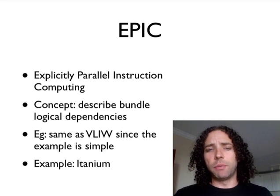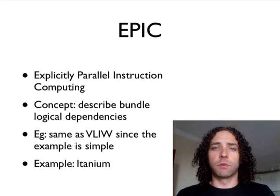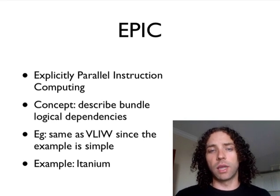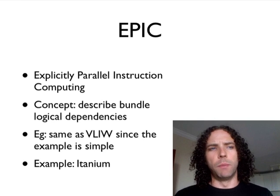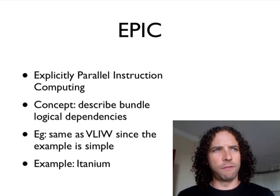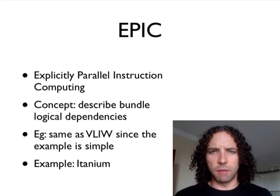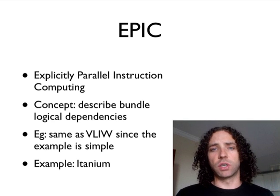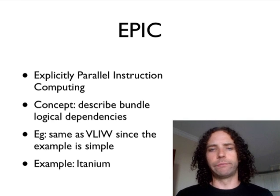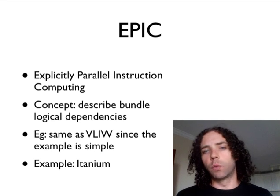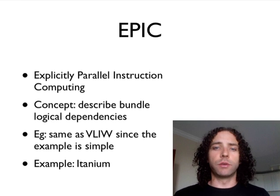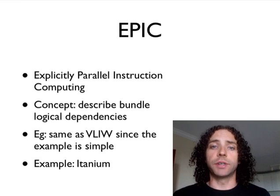The example of EPIC in the market is Intel's Itanium processor. As I understand it, all implementations execute six instructions at a time, with a bundle size of three instructions. This means that in the future, if they came up with one that did nine or twelve, all the old software would still work — it would just work a lot faster.